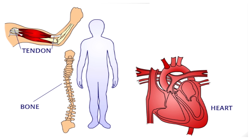Other connective tissues are more obscure, like elastic fibers in the aorta, which keep it soft and rubbery. Even bone is connective tissue.